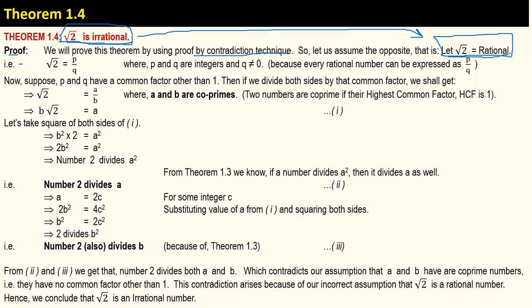So if square root of 2 is a rational number, then it can be expressed in the form p by q, where p and q are integers and q is not equal to 0, because we can express every rational number in the form p by q. So we have: square root of 2 is equal to p by q.